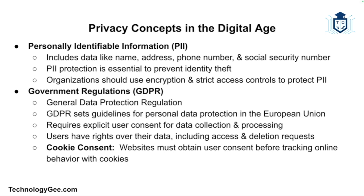Personally identifiable information, or PII, includes data like your name, address, phone number, and social security number. Protecting PII is critical because it can be used for identity theft — always ensure organizations handle PII with proper encryption and strict access controls. The General Data Protection Regulation (GDPR) is a European law mandating that organizations get explicit consent from users to collect data, that users have the right to know how their data is used, and can request deletion of their data. Cookie consent is a common GDPR requirement where websites must get user consent before tracking online behavior.